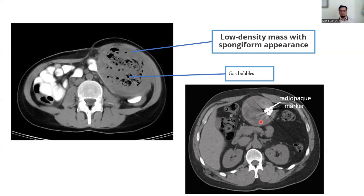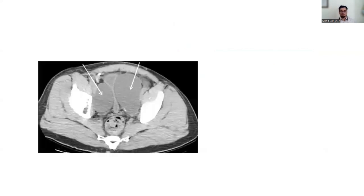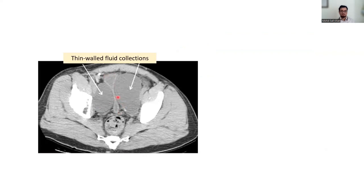A CT pelvis shows two fluid-filled cystic structures compressing the bladder in between, giving it an hourglass appearance. This CT was performed post-operatively after robot-assisted laparoscopic radical prostatectomy, complicated by pelvic lymphoceles — these fluid structures are pelvic lymphoceles.